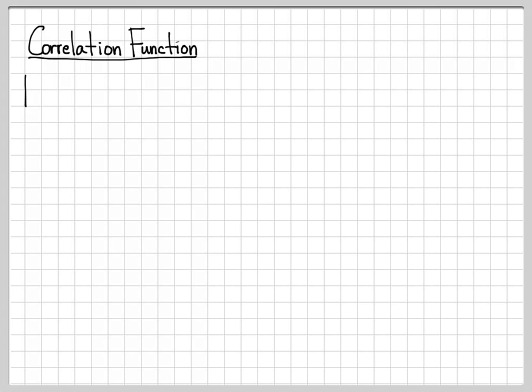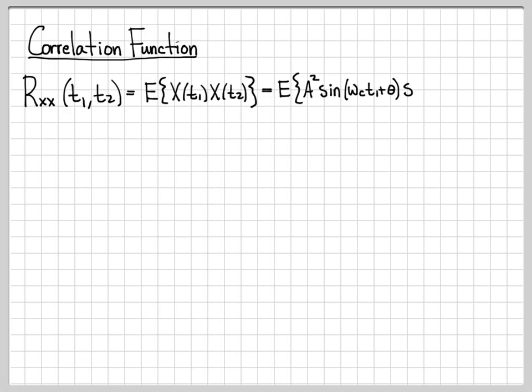So this will be a little bit more complicated, because the definition of the correlation function has the expected value of x at time t1 times x at time t2. This is a real valued random process. So we don't worry about the conjugate in the definition. We just need to compute this quantity. So if I actually write this out, for our specific case that we're working, we get this. We get a sine omega ct1 plus theta times a sine omega ct2 plus theta. So I can bring the a's up front to just be a squared.